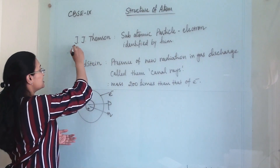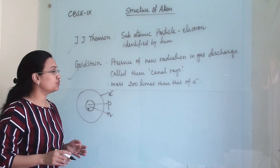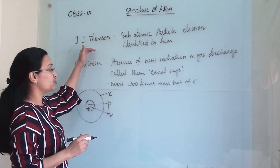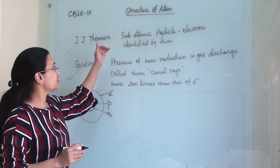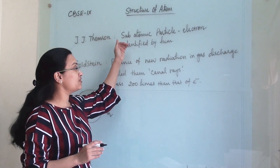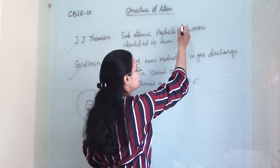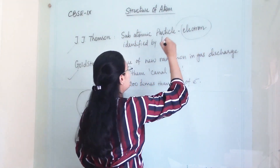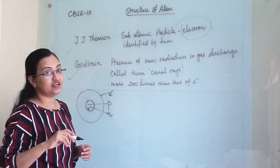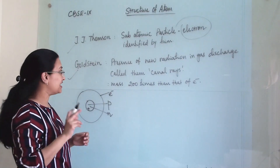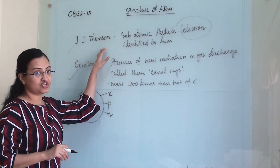The first two things we need to know: J.J. Thomson was the first scientist who found out the first subatomic particle, which was the electron. He identified the electron and his name was J.J. Thomson.